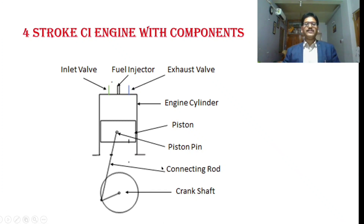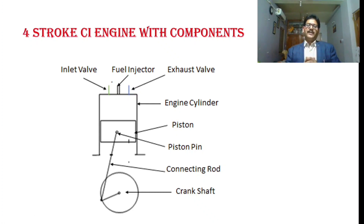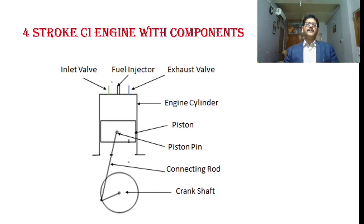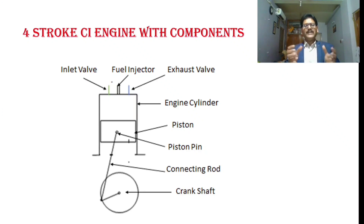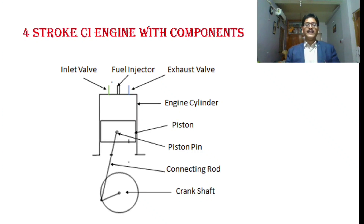The crankcase, which houses the crankshaft, has not been shown. Similarly, the flywheel, which works as an energy accumulator by storing energy developed during the working stroke and supplying it during the idle strokes, has also not been shown. If you have any doubt you can refer to my previous lecture on the four stroke spark ignition engine. With the exception of the fuel injector and fuel feed pump, all the components are also present in the spark ignition engine. Of course, the carburetor is present in the spark ignition engine but not in the compression ignition engine.